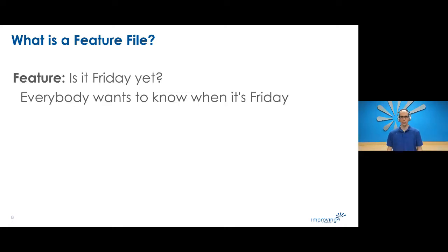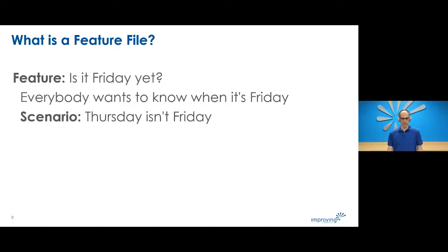At the top of the feature file is the feature keyword, the feature name, and a description about the scenarios that follow. In this case, the feature is called 'Is It Friday Yet?' because everyone wants to know when it's Friday. The feature keyword must be followed by a background, scenario, or scenario outline keyword.